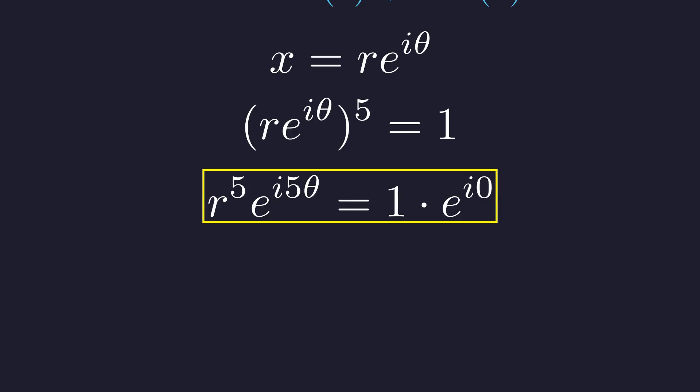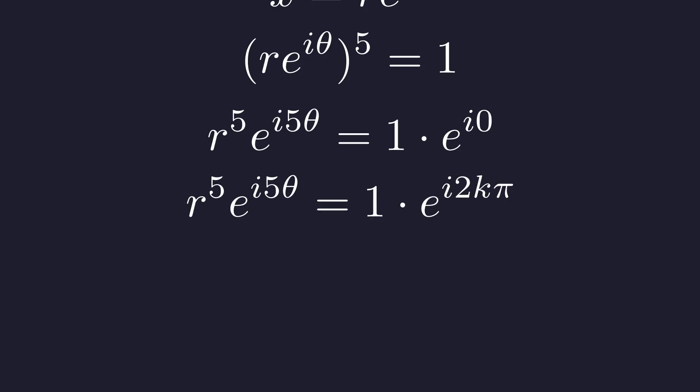But wait, the number 1 can be written in infinitely many ways in the complex plane. We need the most general form. Since e to the i 2 pi equals 1, we can add any integer multiple of 2 pi to the exponent. This gives us the most general form of the number 1.